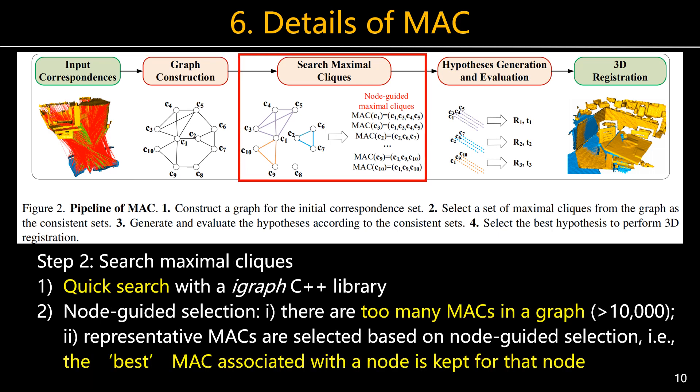The second step is searching for Maximal Cliques. We perform a quick search based on the iGraph library. However, the number of Maximal Cliques obtained through the search process is often in the order of tens of thousands. Therefore, we propose a node-guided filtering method for Maximal Cliques. Since each graph node may be contained in multiple Maximal Cliques in its vicinity, we assign a weight to each Maximal Clique based on edge weights, and then associate each node with the Maximal Clique that has the largest weight — that is, one node associates only one Maximal Clique.